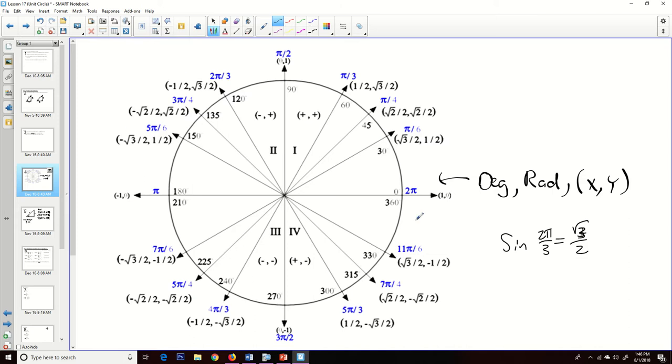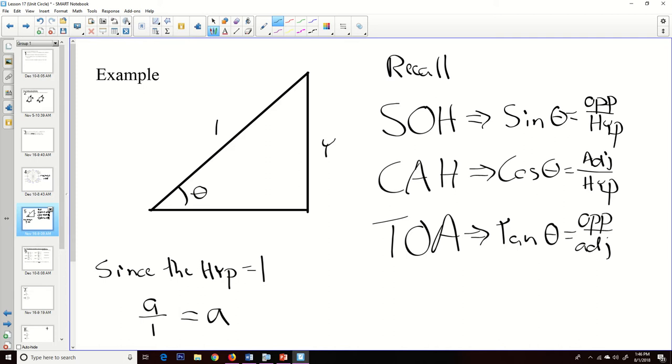And so we're going to use those relationships to come up with some values. Now, we also are going to see that if I have a right triangle where every single hypotenuse is of value 1, then if we want to talk about our old SOHCAHTOA, in each of these instances, the hypotenuse has a 1 value.